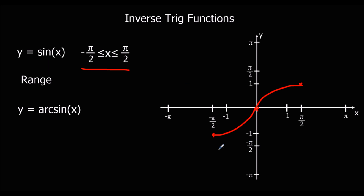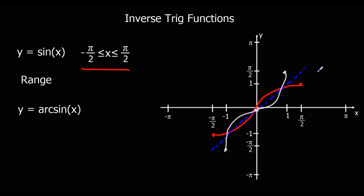The inverse is a reflection in the line y equals x. If we think about our key points for an inverse, the x becomes the y and the y becomes the x — the input becomes the output and the output becomes the input. So minus pi over 2, minus 1 will now be minus 1, minus pi over 2. It will still go through 0, 0, and pi over 2, 1 will now be 1, pi over 2. Then we just draw the reflection.